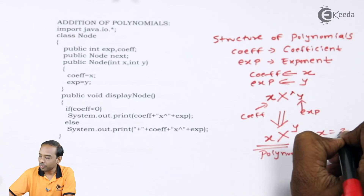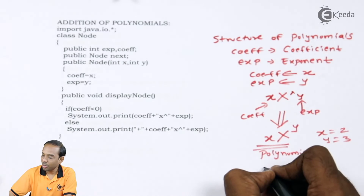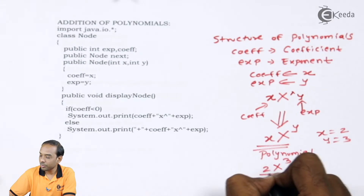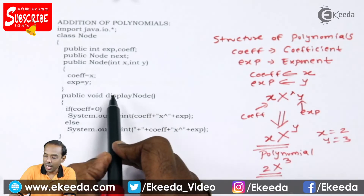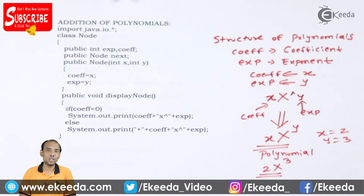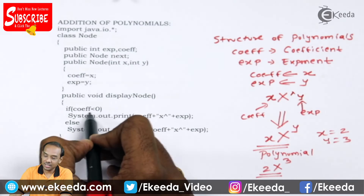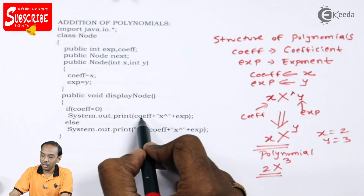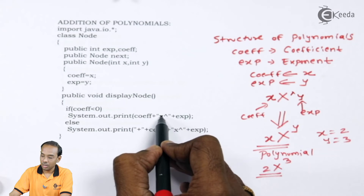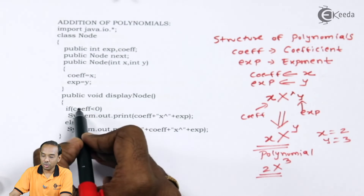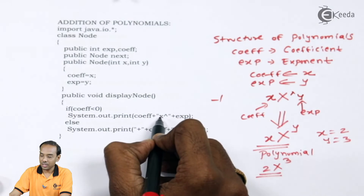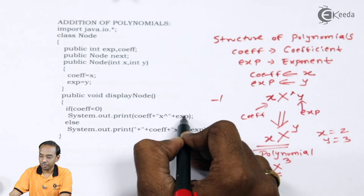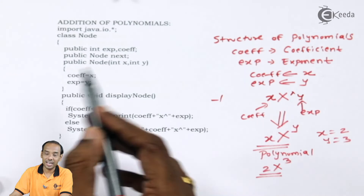For example, if x equals 2 and y equals 3, we have 2x³. This is how we vary the values from the user and put them into coefficient and exponent. To display the value of a node, I define a function called displayNode. I check if the coefficient is less than zero — if it is, I display the coefficient followed by x raised to exp.